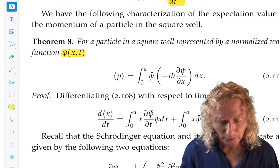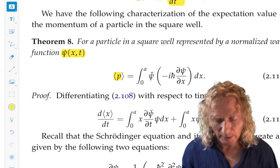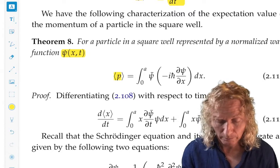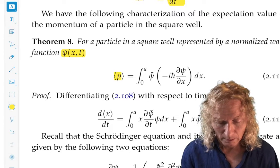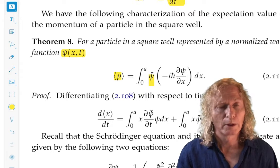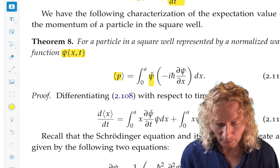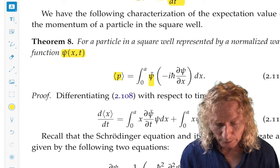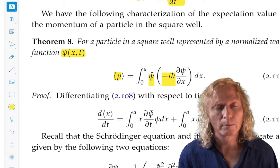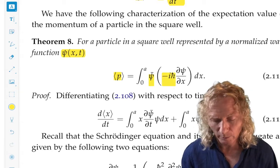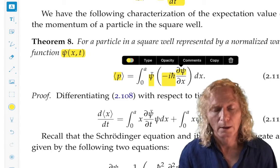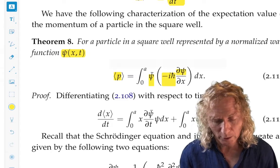That says that if the particle is in the state psi of x, then the expected value of momentum in that state is - we take the complex conjugate of the particular state, psi bar, we put the momentum operator minus i h bar d by dx in between and let it act on the state psi and integrate it over the domain.